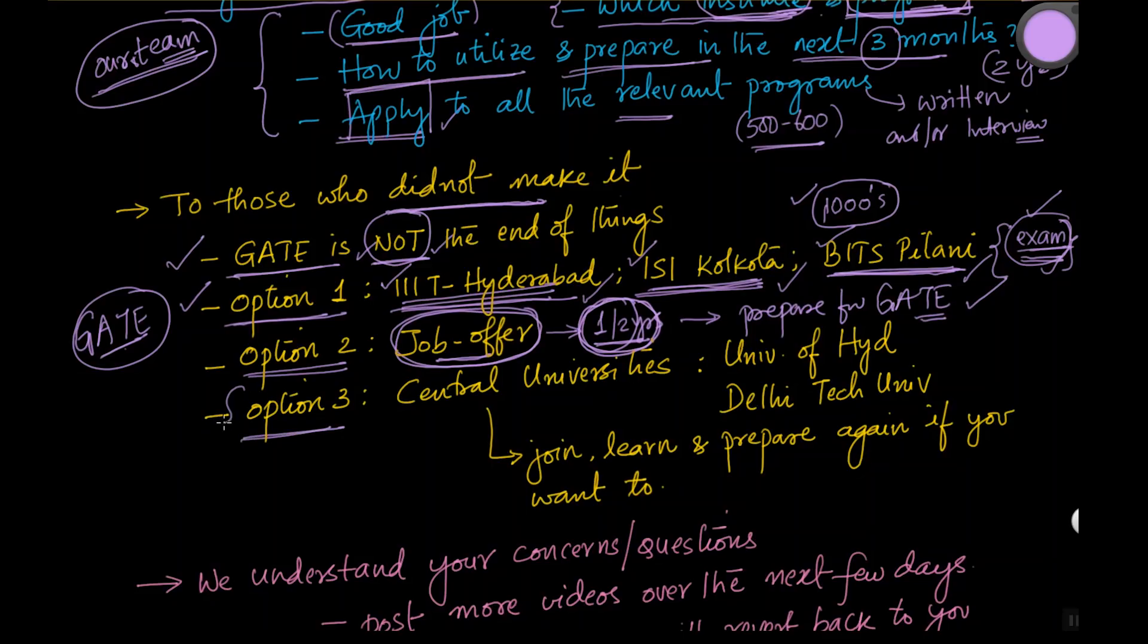There is option three, which is, this is an option that many people don't consider. There are actually some very good central universities. Like for example, in Hyderabad, we have University of Hyderabad, earlier it was referred to as Hyderabad Central University, today it's referred to as University of Hyderabad. In Delhi, there is Delhi Technology University. These two are pretty good central universities, with some terrific faculty and some good master's programs. So our suggestion is, you could join these institutes, continue your learning. These institutes provide some great learning resources, some great peers, some great faculty.